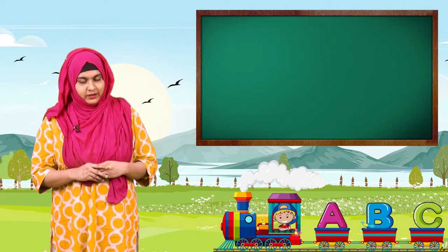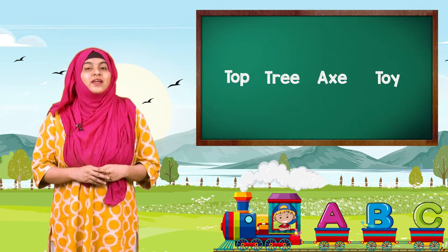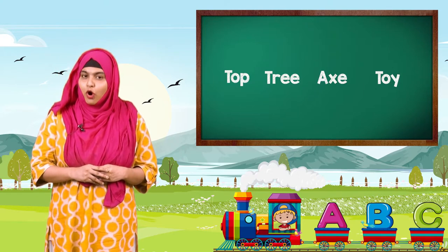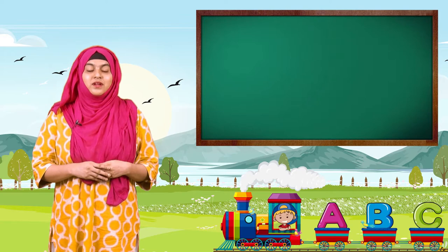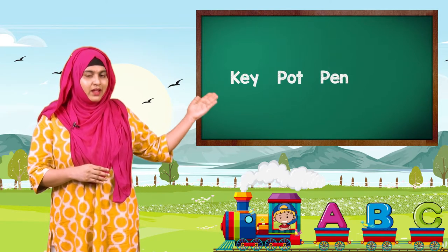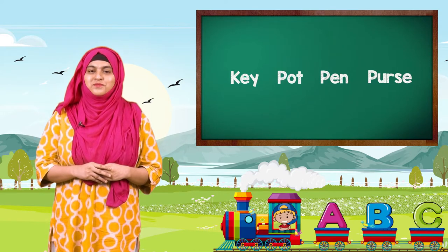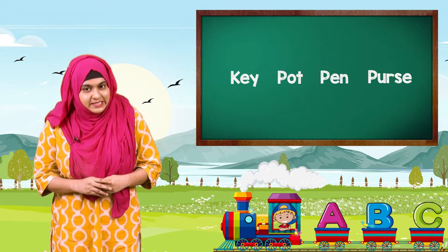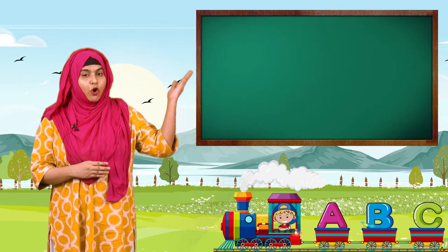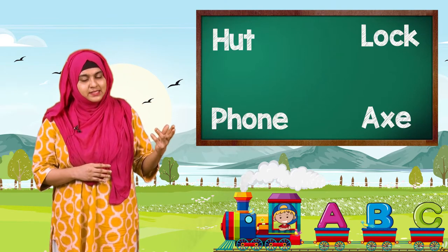The next group of words are Top, Tree, Axe, and Toy. Then: Key, Pot, Pen, and Purse — can you tell me which is the odd man out? Yes, the odd man is Key. Children, we saw that the odd man words were Hut, Lock, Phone, Axe, and Key.